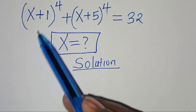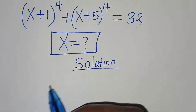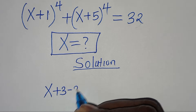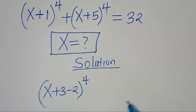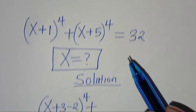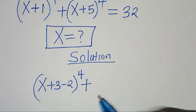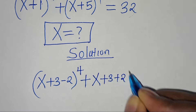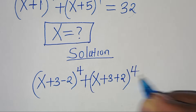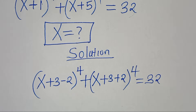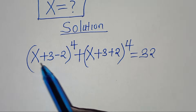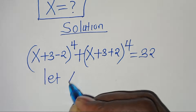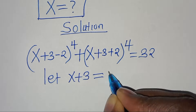The first thing to do here, we can express x + 1 as (x + 3) minus 2, raised to the power of 4, then plus x + 5, which can be expressed as (x + 3) plus 2 raised to the power of 4. This is equal to 32. We have x + 3 in both terms, so we can let x + 3 be equal to u.